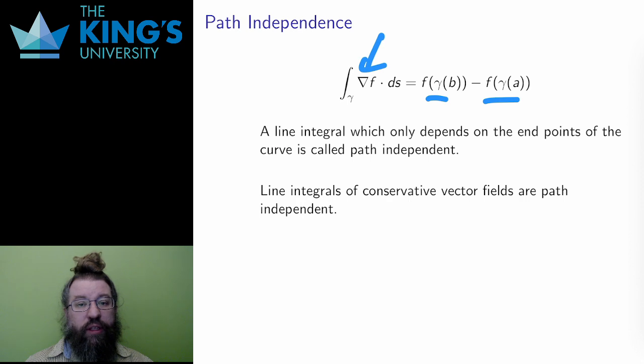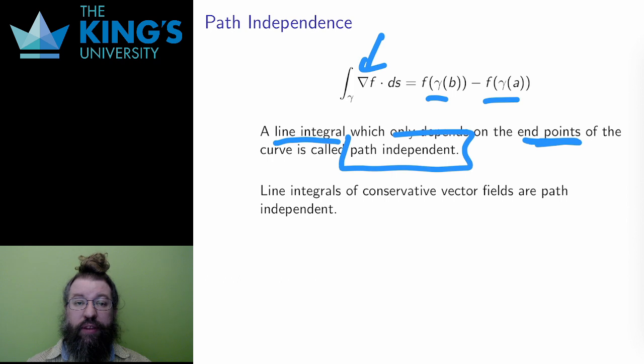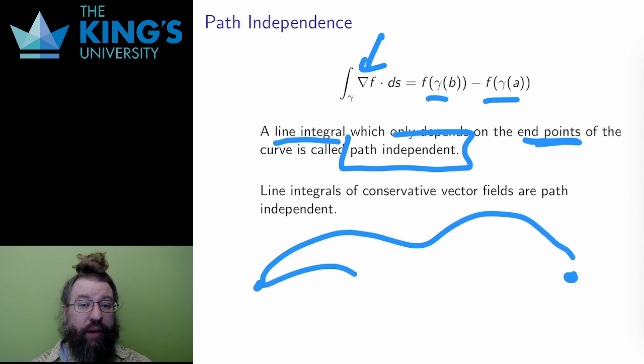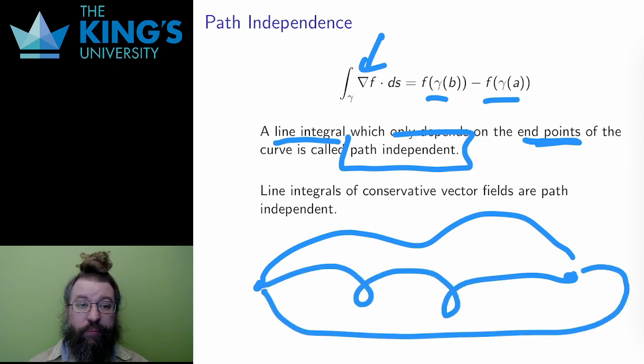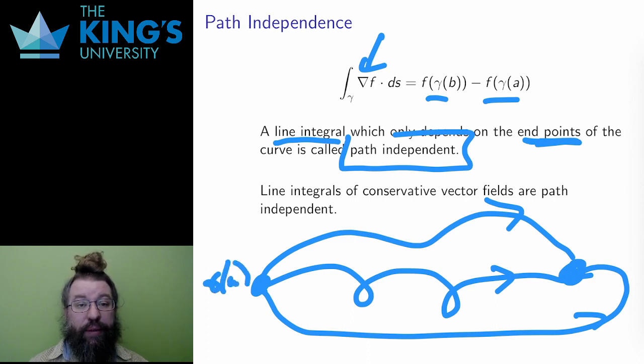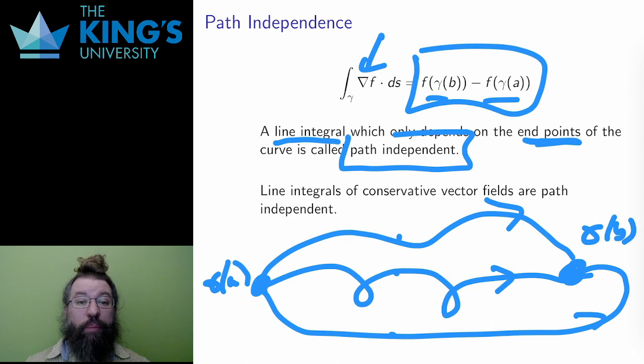Here is a definition. A line integral which only depends on the endpoints of the curve is called path independent. This means that any path between the two points gives the same result for the integral. The path doesn't matter, only the start and the end. So, line integrals of conservative vector fields are path independent.